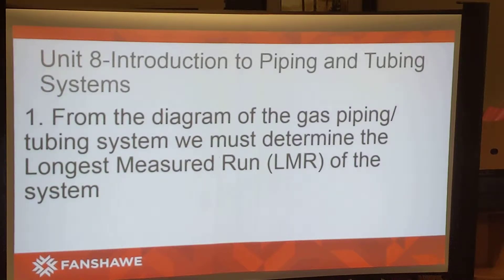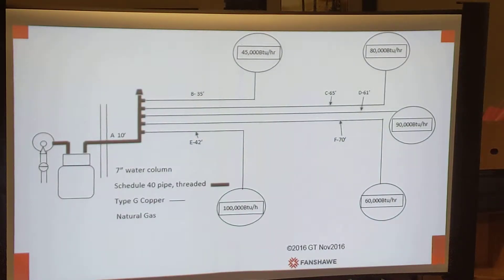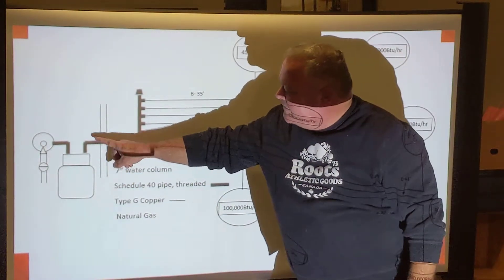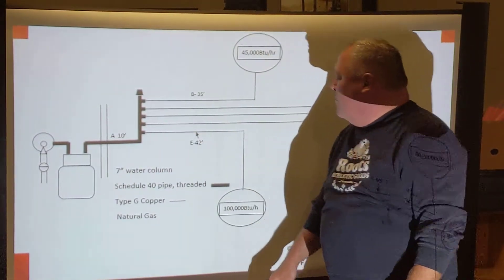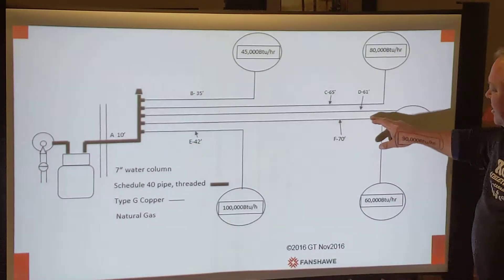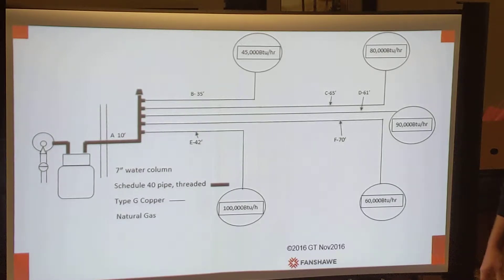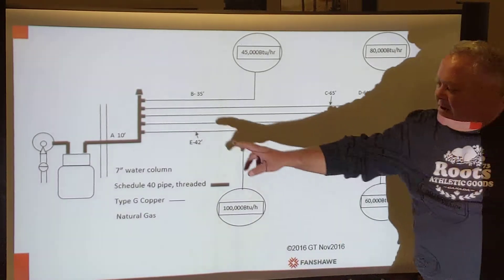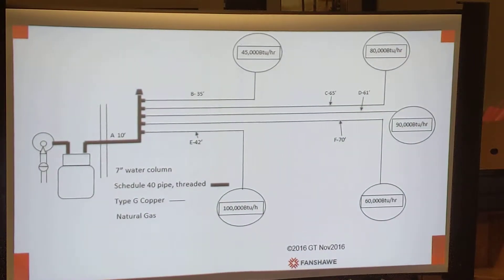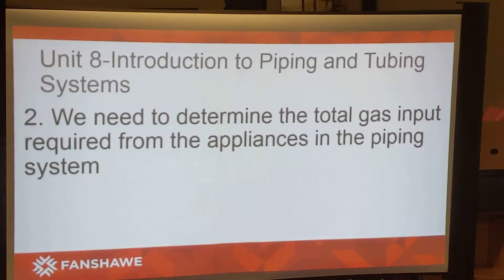When we look at this application, we have the longest measured run measuring from the outlet of the gas meter. We have a 10-foot section of schedule 40 pipe and also a 70-foot section of tubing to the 60,000 BTU per hour appliance. Section F, which is 70 feet, plus the 10 feet are what we're going to use to determine our longest measured run, so our LMR is going to be 80 feet.